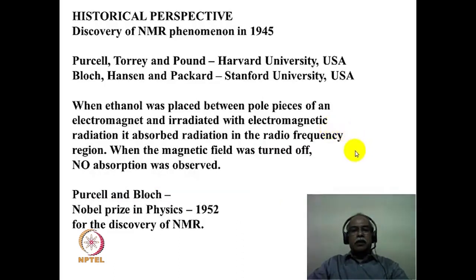From the historical perspective, the phenomenon of nuclear magnetic resonance was discovered in the year 1945 by two groups working independently — one at Harvard University and another at Stanford University. Purcell, Torrey, and Pound were working at Harvard University, while Bloch, Hansen, and Packard were working at Stanford University.